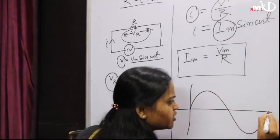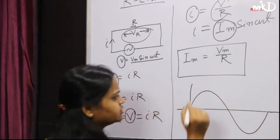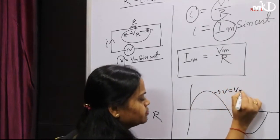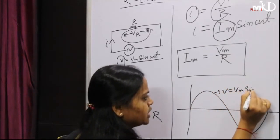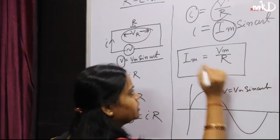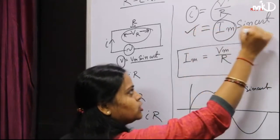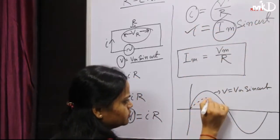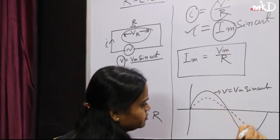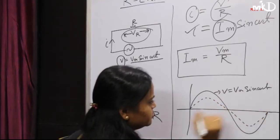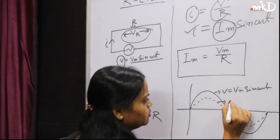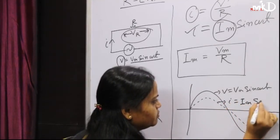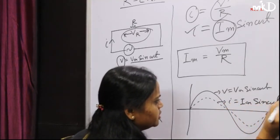If we draw the waveform, both V and I should be in phase. V = Vm sin(ωt) and I = Im sin(ωt). Both are in-phase components.